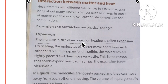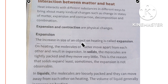Next is the interaction between matter and heat. Heat interacts with different substances in different ways to bring about many kinds of changes, including changes in states of matter. States of matter are three types: solid, liquid, and gas. Heat can also cause expansion and contraction, decomposition, and combination.